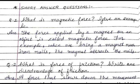A magnet does not only pull or attract. If there are two magnets, each magnet has two poles - a North pole and a South pole. If the North pole of one magnet comes near the North pole of another magnet, both magnets repel each other and move away.